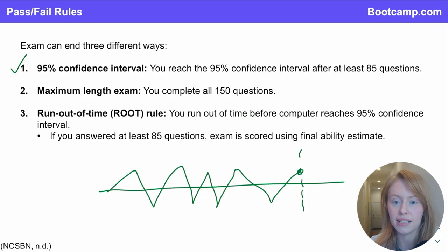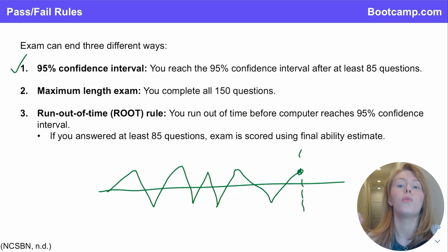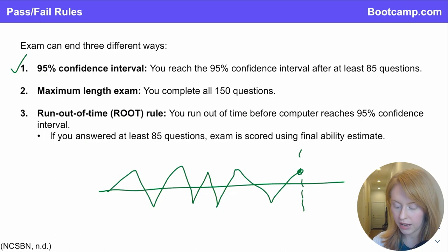Similarly, there's a run out of time rule. If you've answered at least 85 questions — which is the minimum length exam — and you run out of time either before you reach the 95% confidence interval or before you reach the maximum 150 questions, then similar to the maximum length exam, your pass-fail decision is made based on whether you are above or below the passing level at that final question.